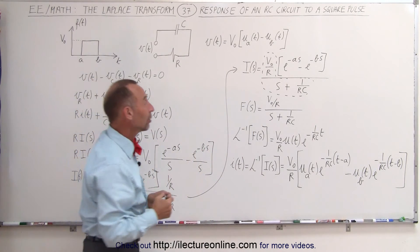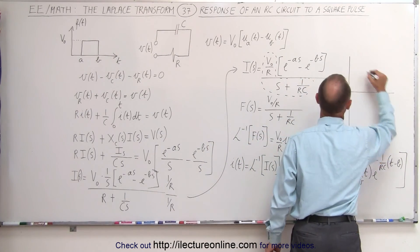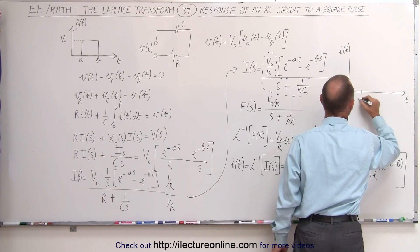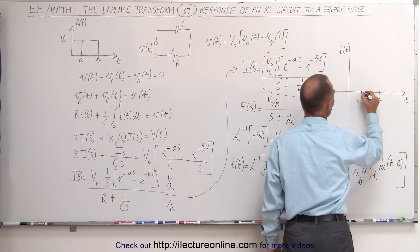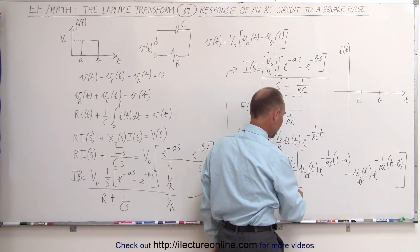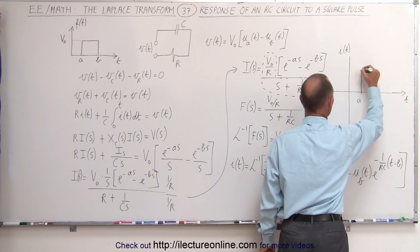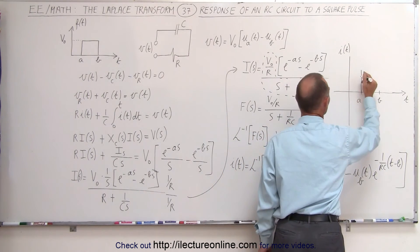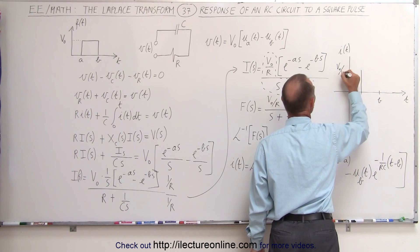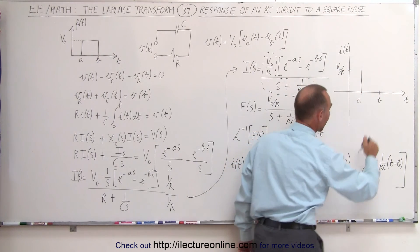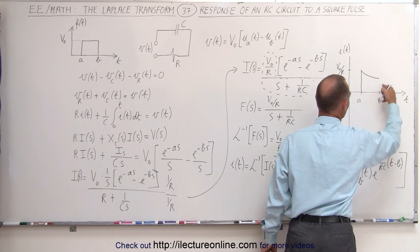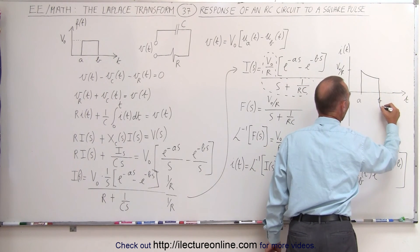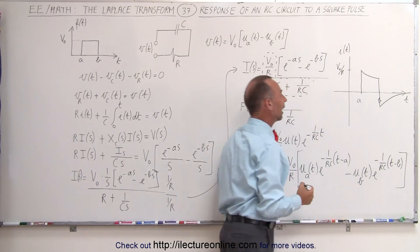Graphing the current as a function of time: the input starts at A and ends at B. At time equals A, we get E to the 0, which is 1, so there's an immediate step up to V sub nought over R. Then the current decays exponentially until time B, where we subtract the second term, and the current decays back down to zero over time.